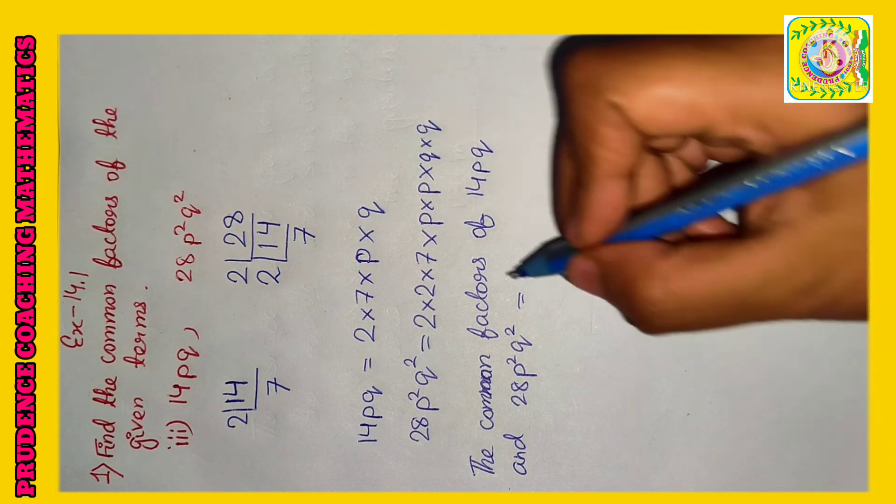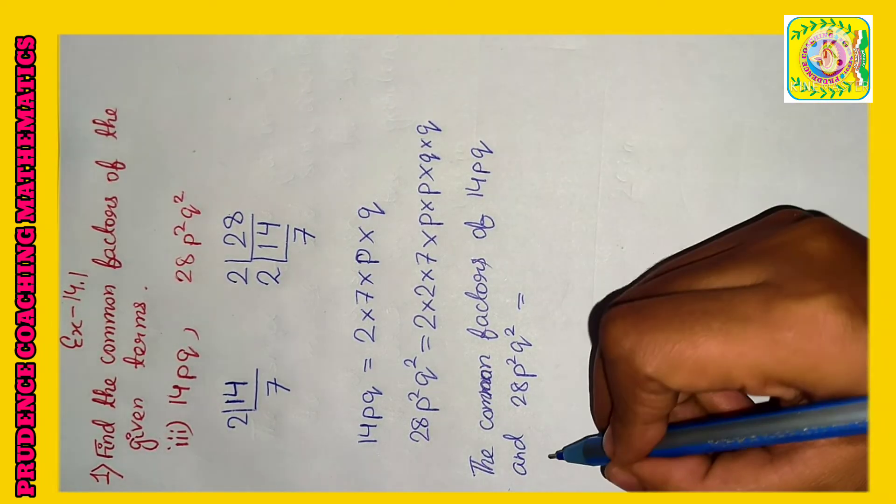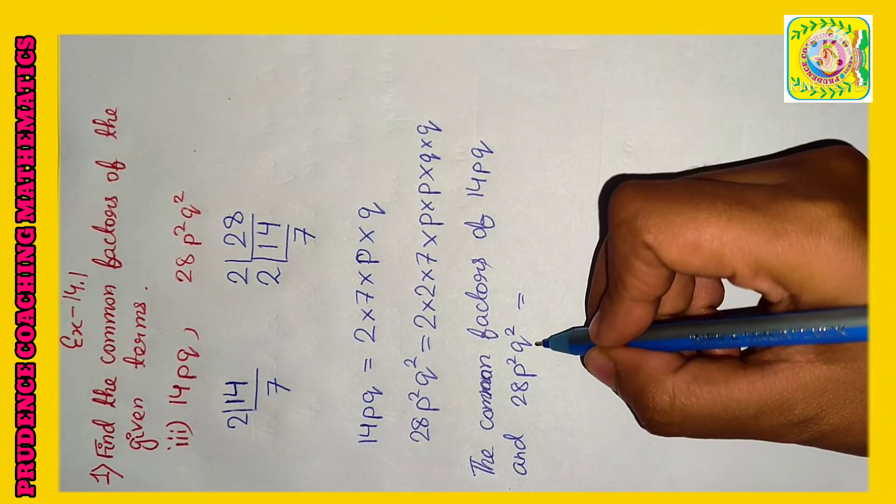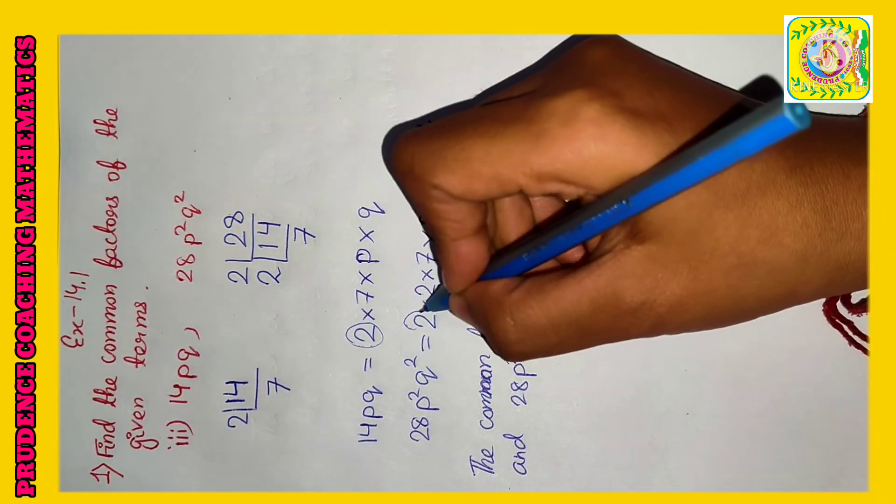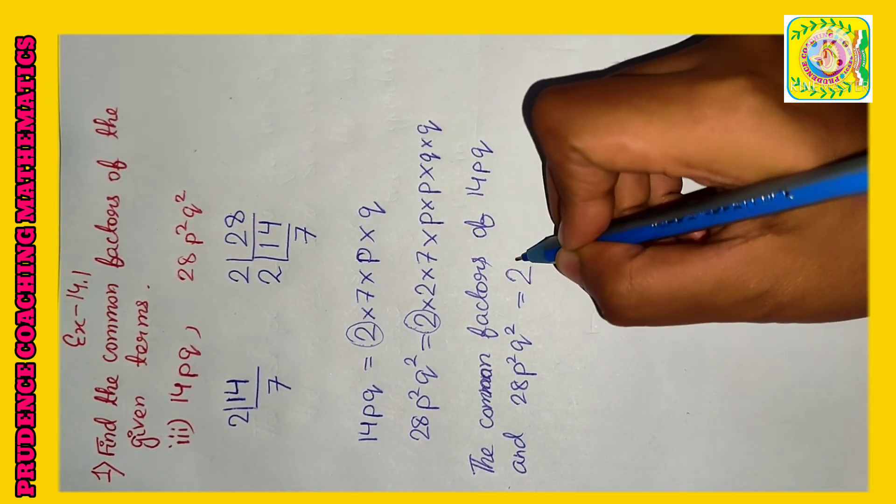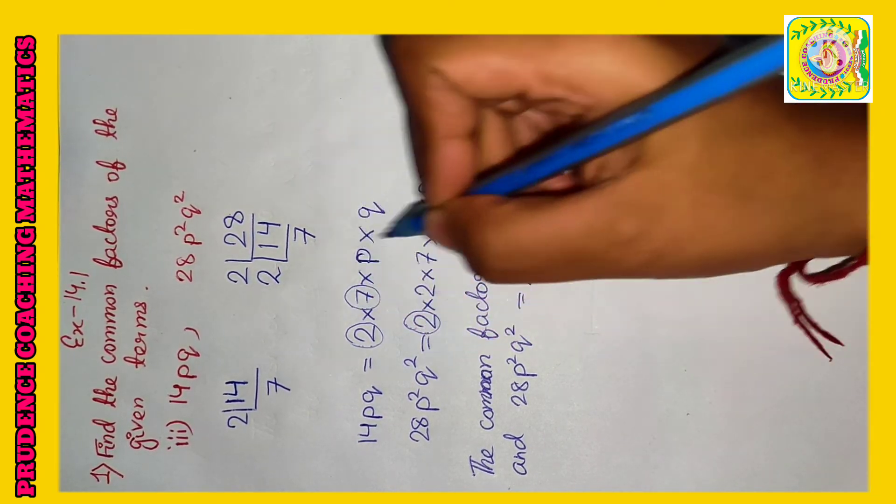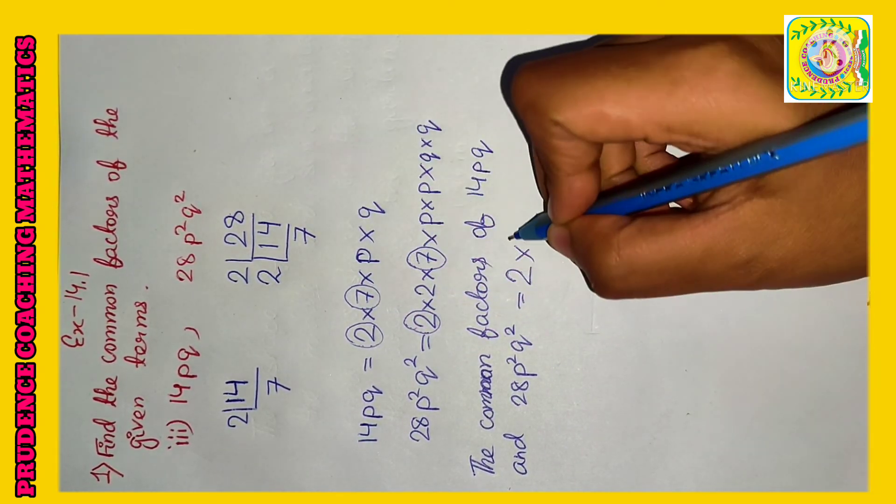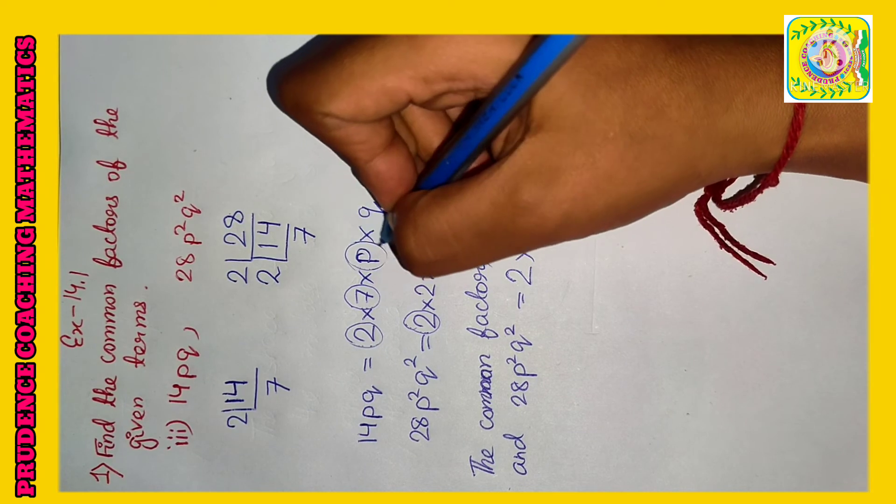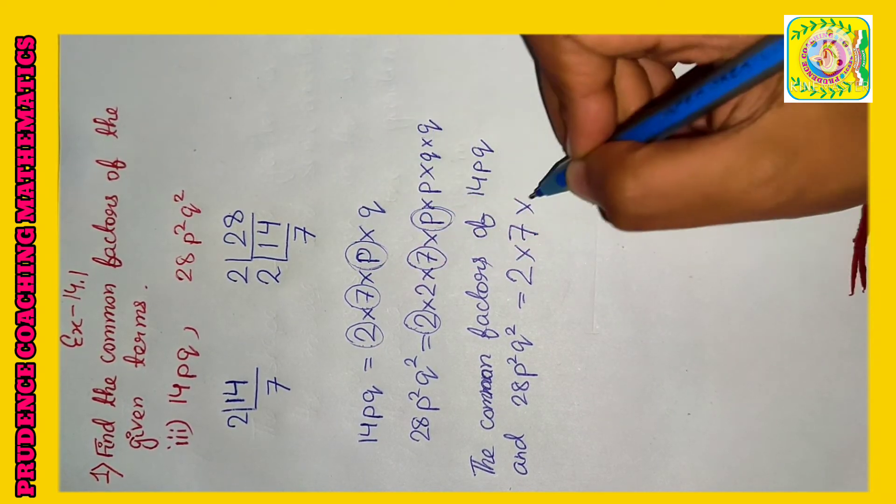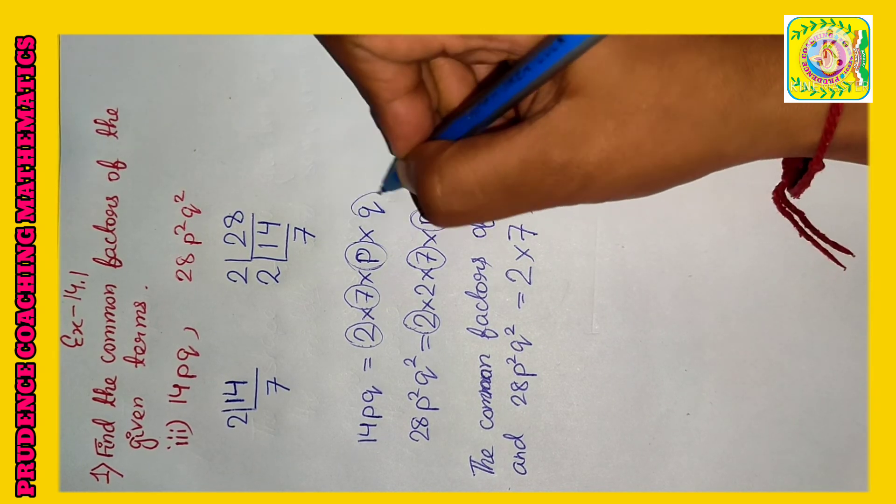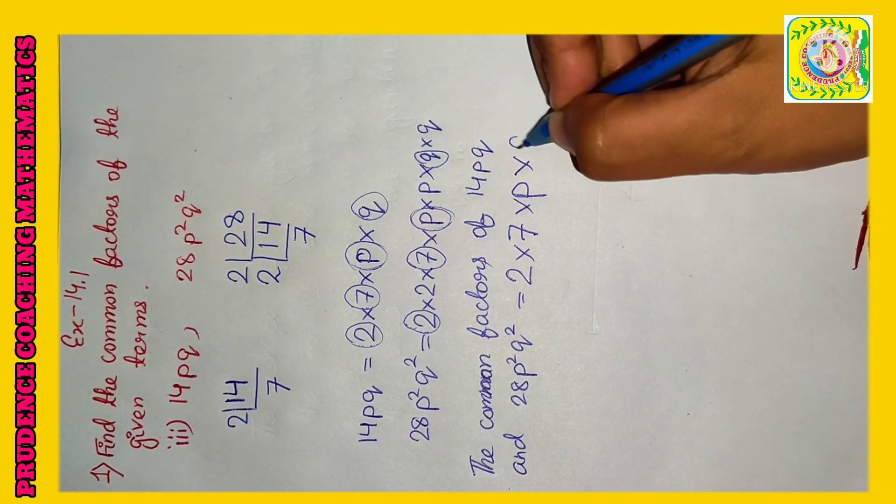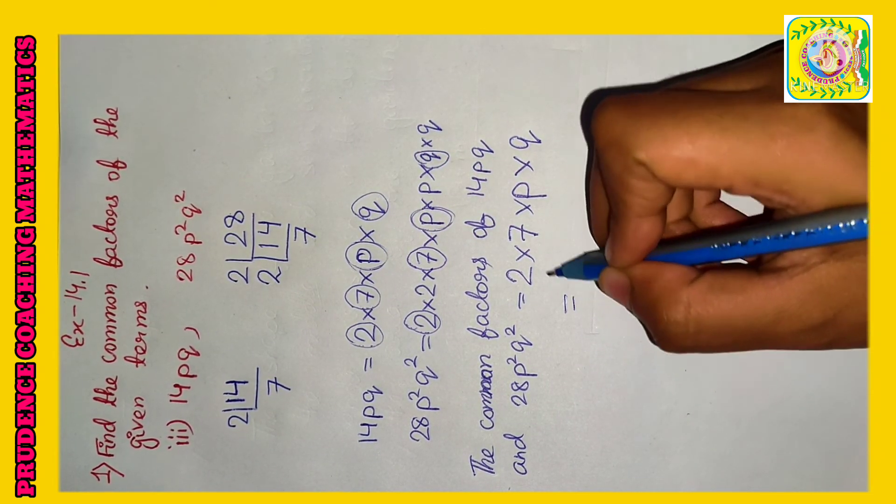Now we need to write the common factors of 14pq and 28p square q square. So here we have 2, here also we have 2, so we will write 2 into 7. Here we have 7, here also we have 7. Here we have p, here also we have p, so write p. Here we have q, here also we have q, so into q. So your answer will be 14pq.